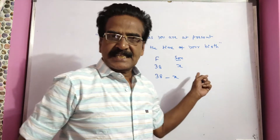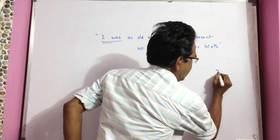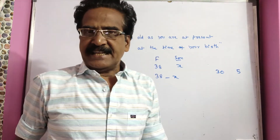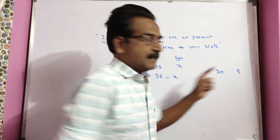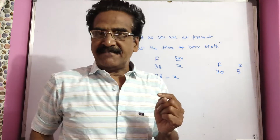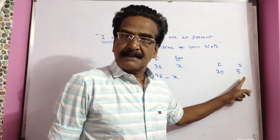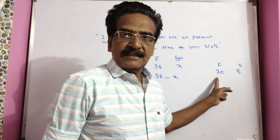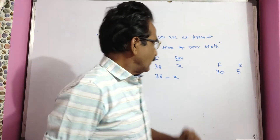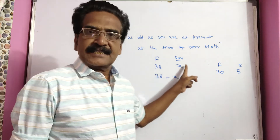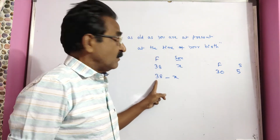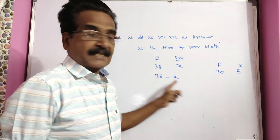Friends, see this example. Say father is 30 years at present, son is 5 years. At the time of son's birth, father was 30 minus 5, which is 25. Right? So in the same way, if father is 38 years and son is x, then father's age at the time of son's birth was 38 minus x.